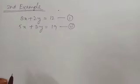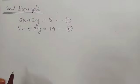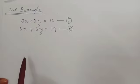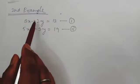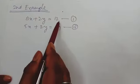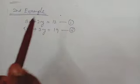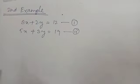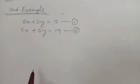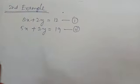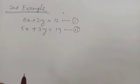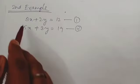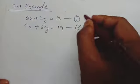Now let's look at the second example. You can see there are two linear equations: 3x plus 2y equal to 12 — this is equation 1 — and 5x plus 3y equal to 19 — this is equation 2. From these two linear equations, take whichever seems easier. Equation 1 looks a bit easier, so we take equation 1.